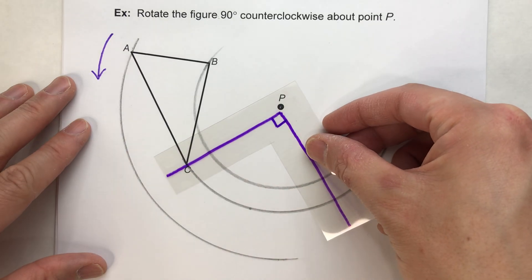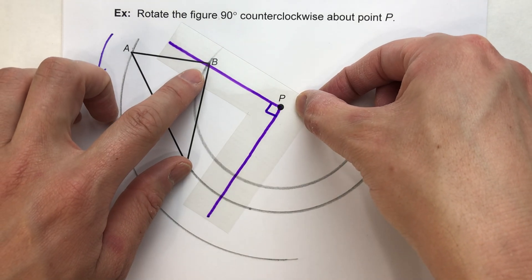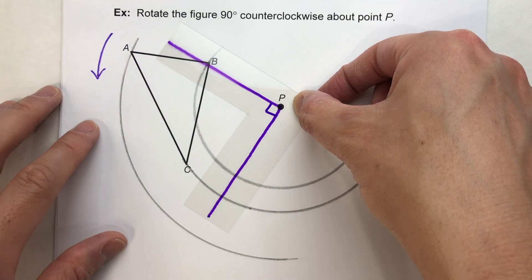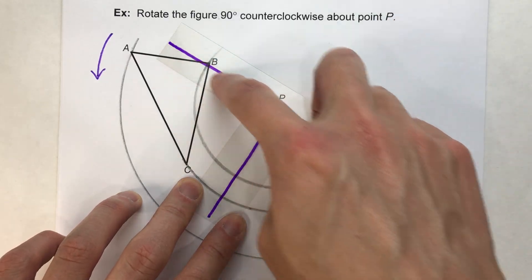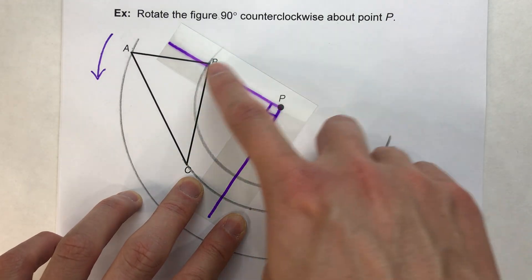But again, we're using construction. So what we're going to have to do is we're going to have to construct this perpendicular. So we can construct the perpendicular directly on here, but I find it gets super messy and it's hard to kind of keep track of everything.